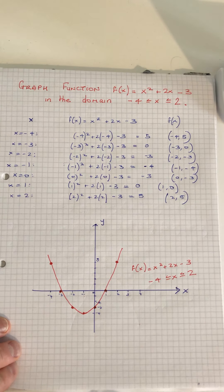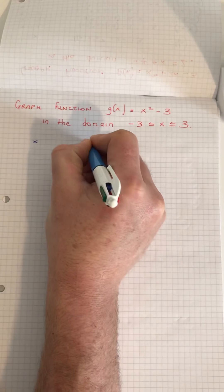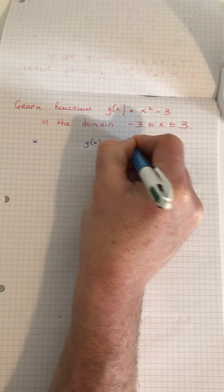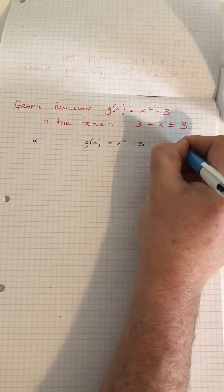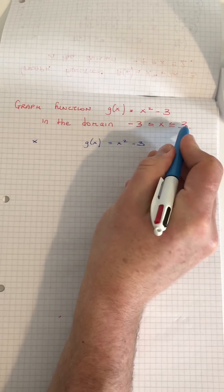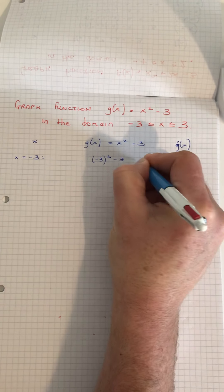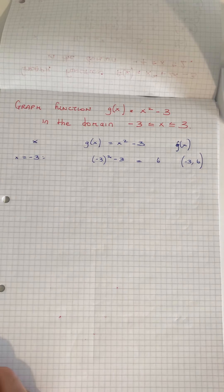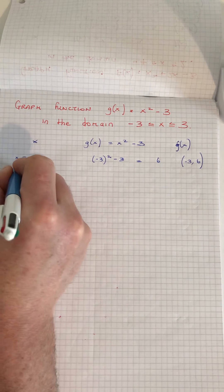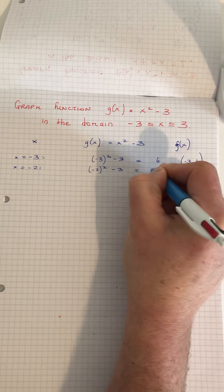Now the second part: we have g(x) = x² - 3, from minus 3 to 3. So we let x = -3 and get (-3)² - 3 which gives me 6, so the point is (-3, 6). Very important to use brackets here. When x is -2: (-2)² - 3 = 1, so the point is (-2, 1).